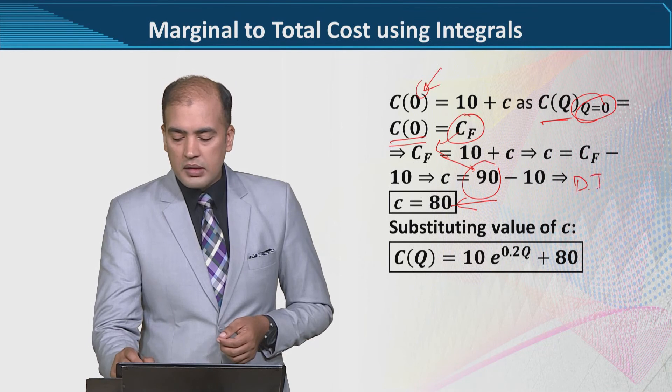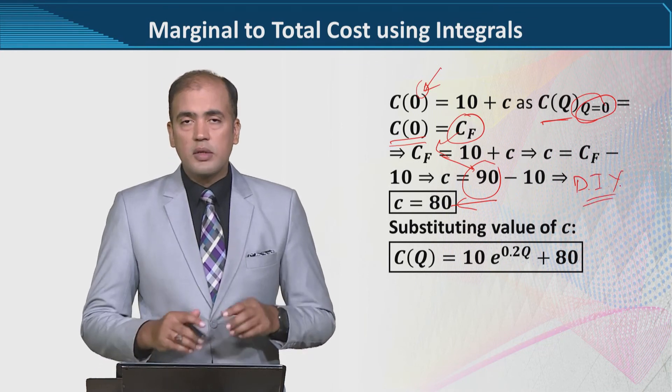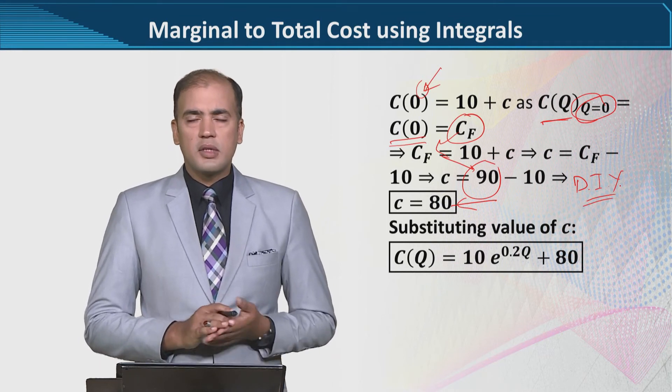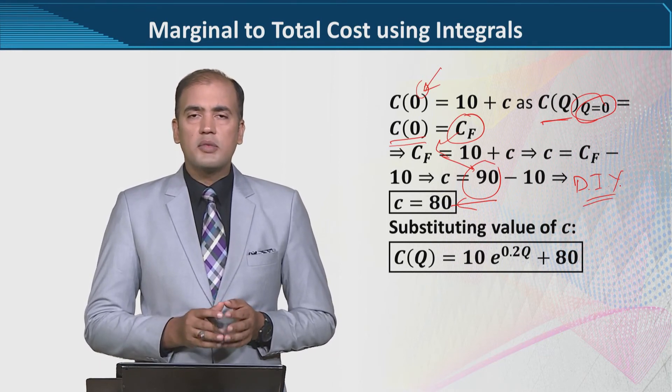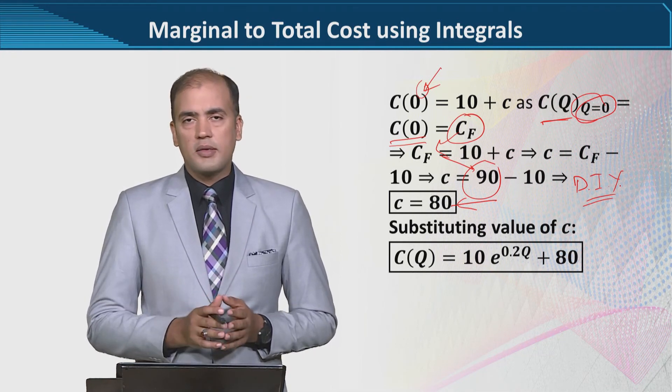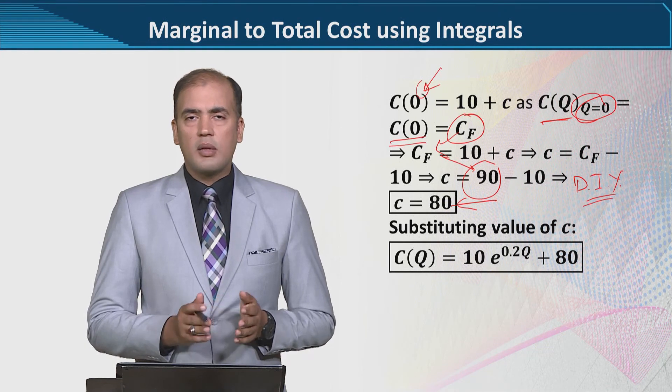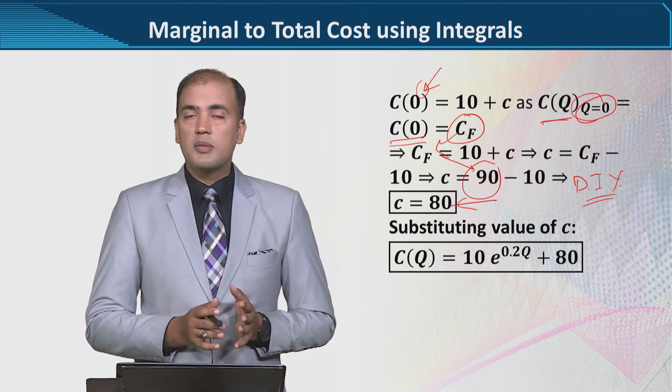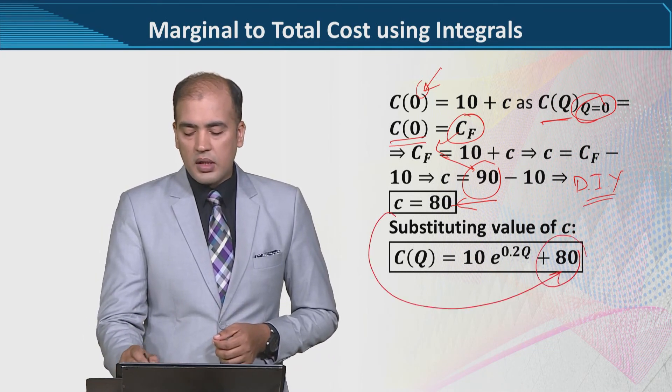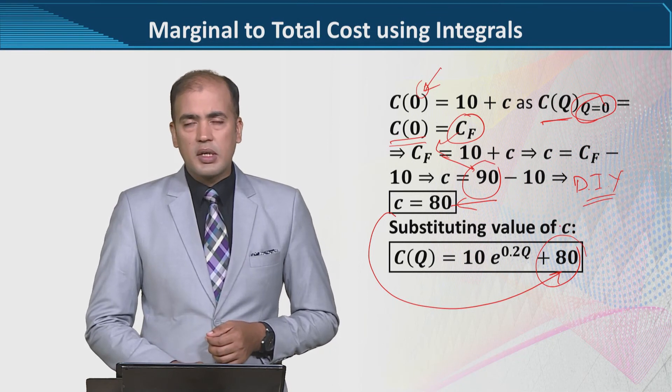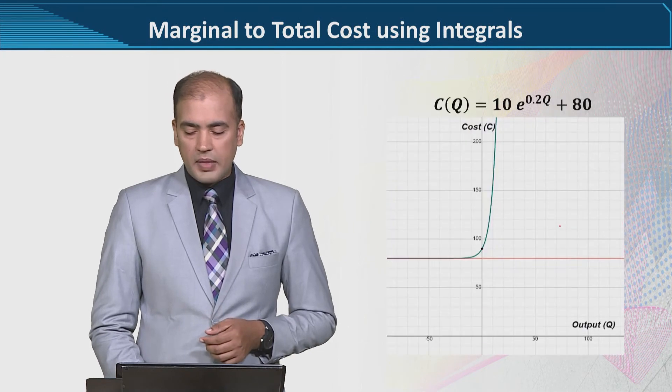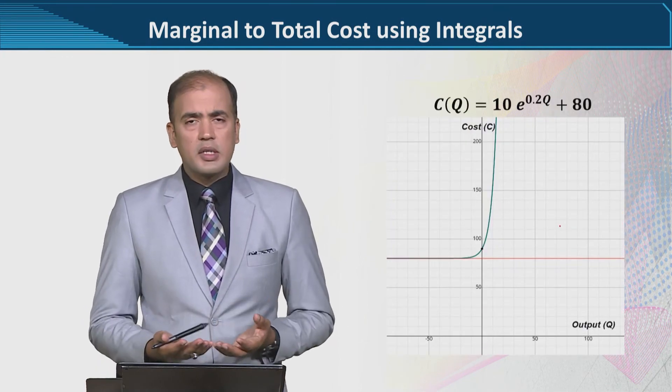The steps are simple. There is fixed cost which is given, we use it as an initial condition because of cost at no output. We can find c, and then use this c value to get the definite solution of the cost function.